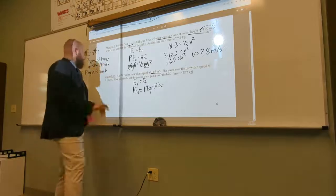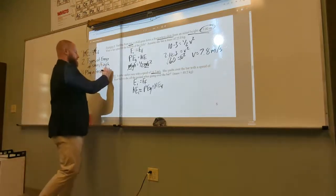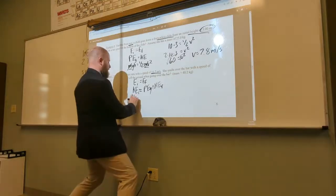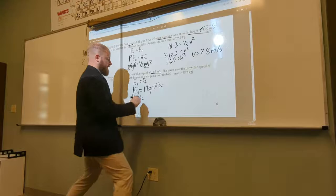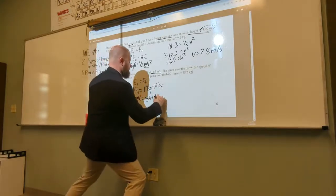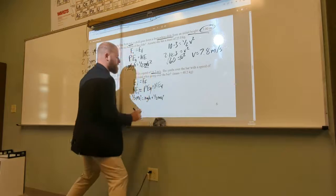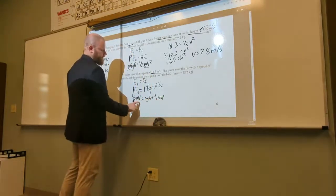So, let's go ahead and do my third step, go ahead and plug in my formulas. So, I have one-half mv squared. Now, that's my vi, right? Equals mgh plus one-half mv squared, right? So, these are different values.